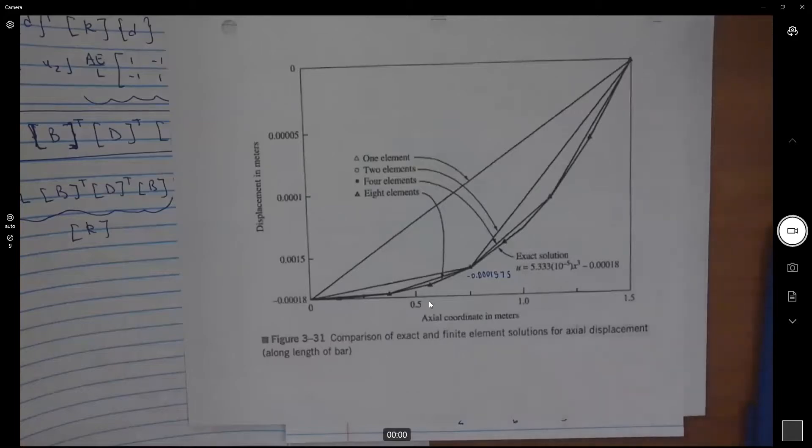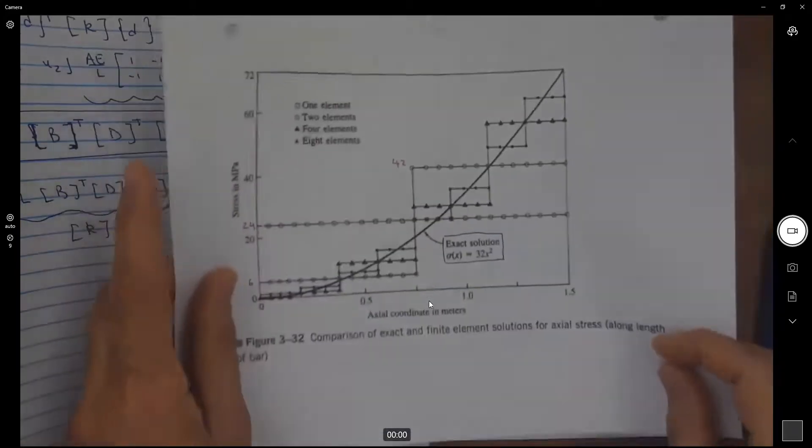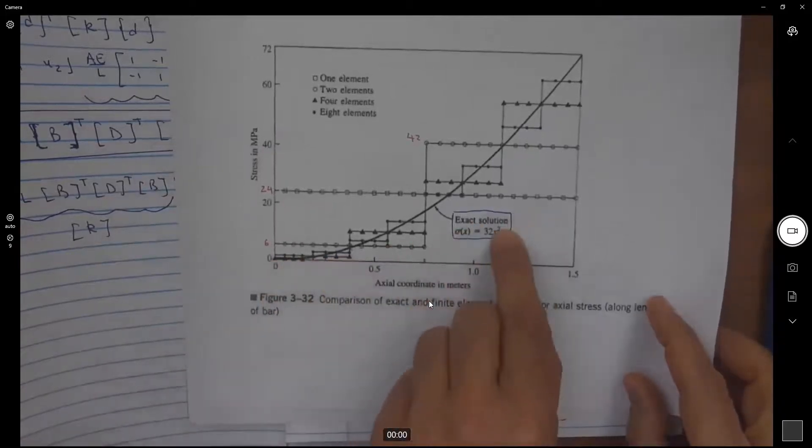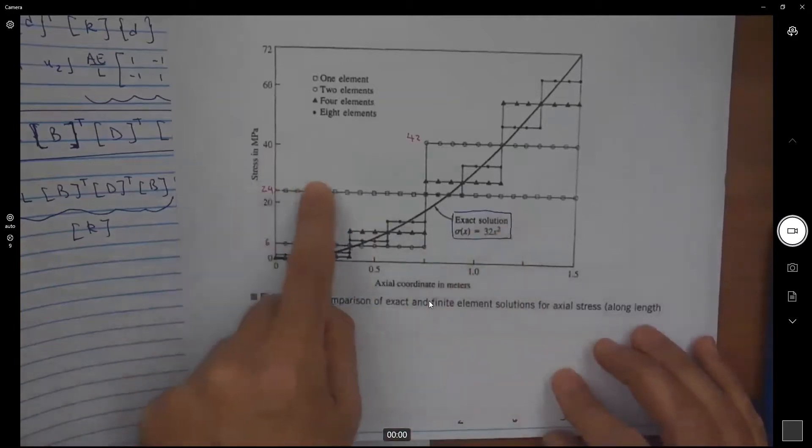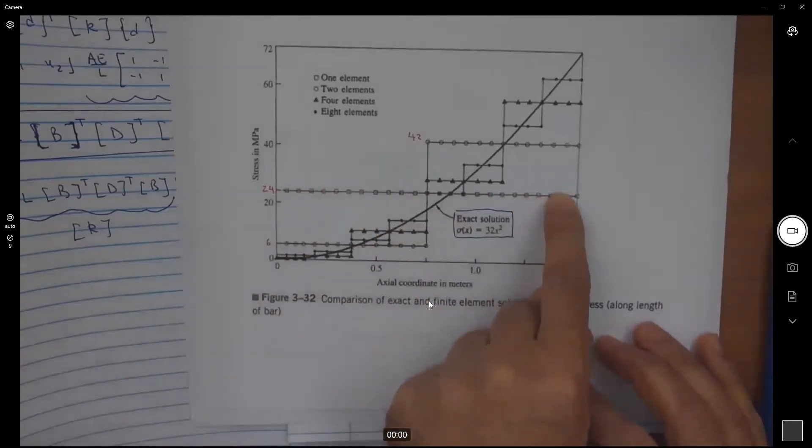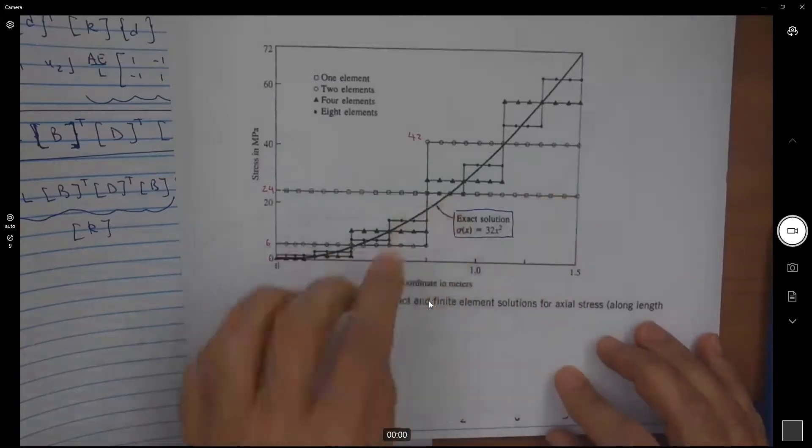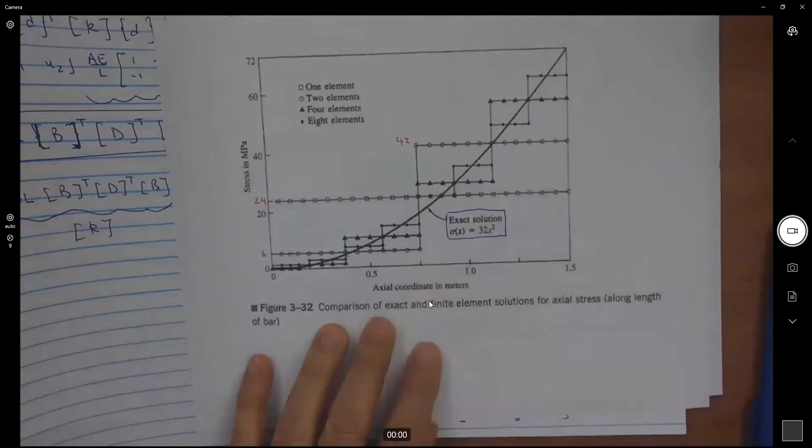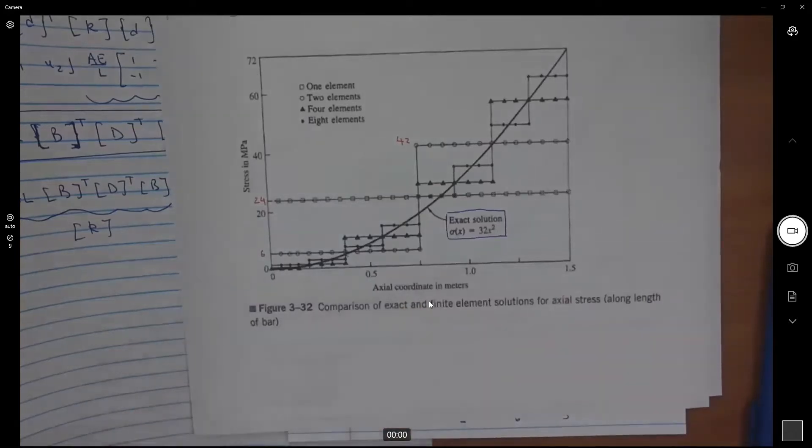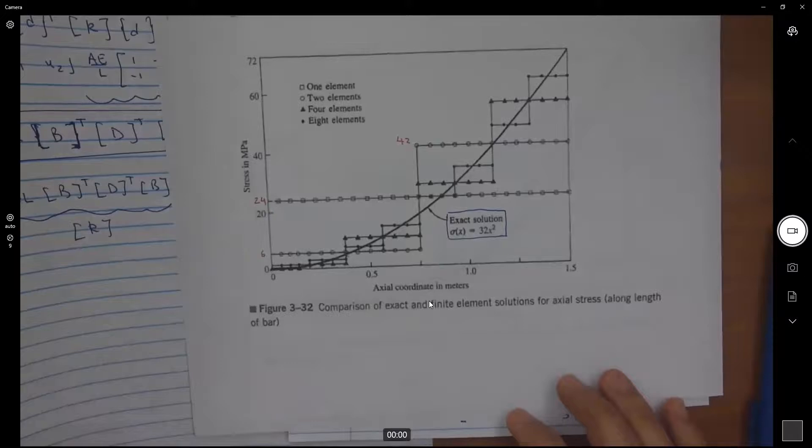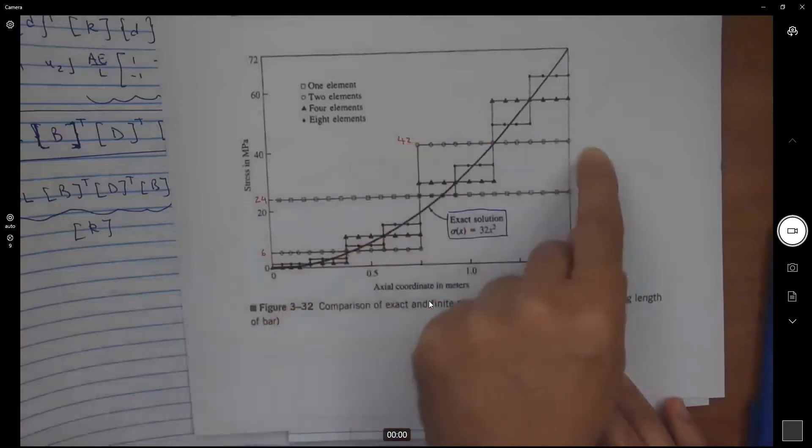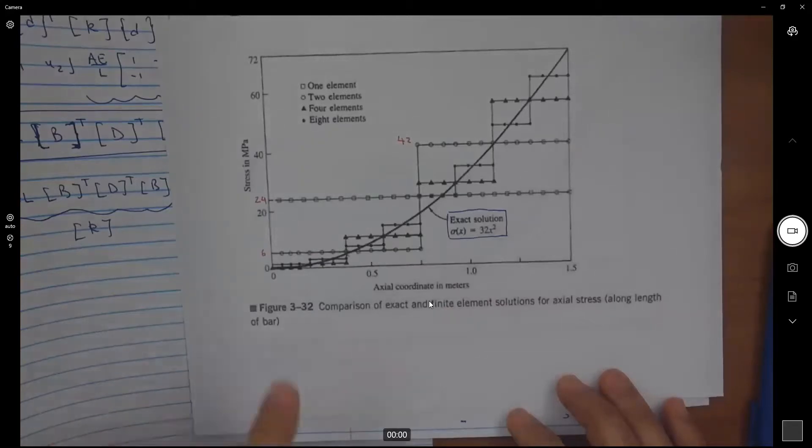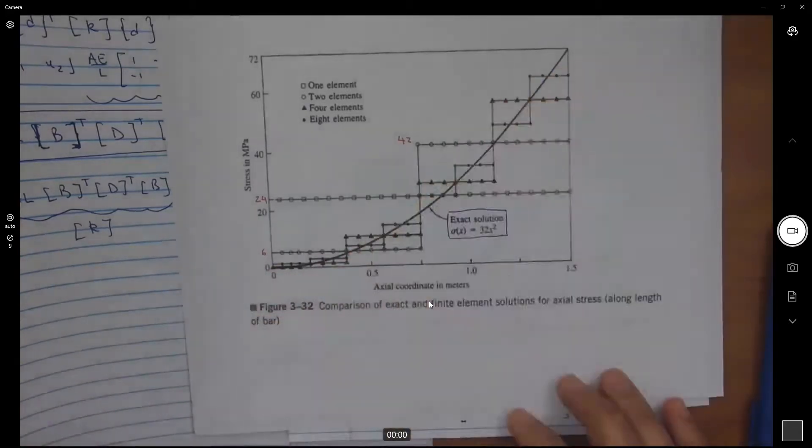On the other hand, if I look at my stress function, the exact solution is this 32 x squared. Guess what? If I'm using the one element, this is my 24. I am only correct somewhere between the two nodes, but everywhere else is approximate. If I use two elements, I make a slight improvement. I go here from 6, jump to 42 and straight. If I go to four and eight elements, I keep getting closer to the curve, as you can see.